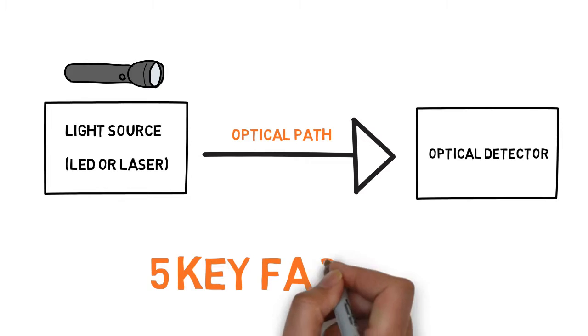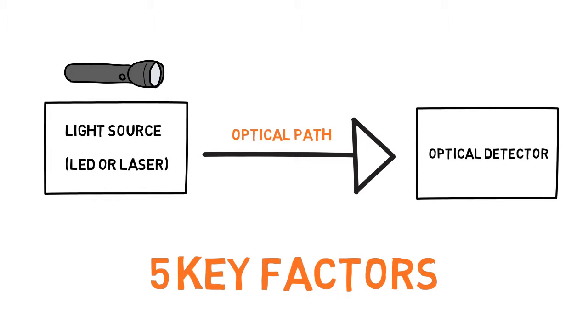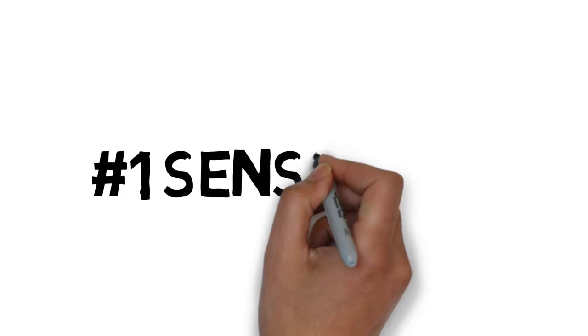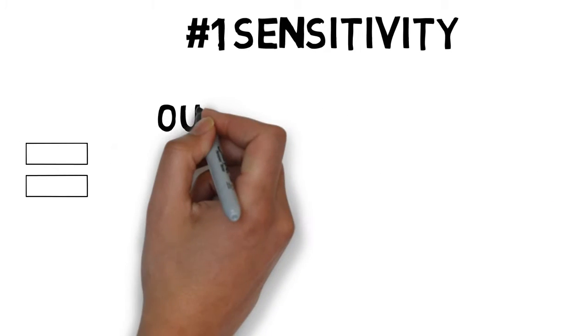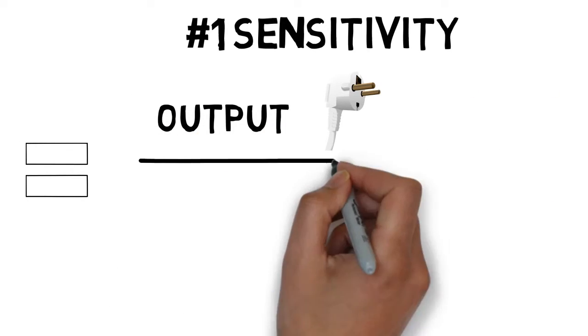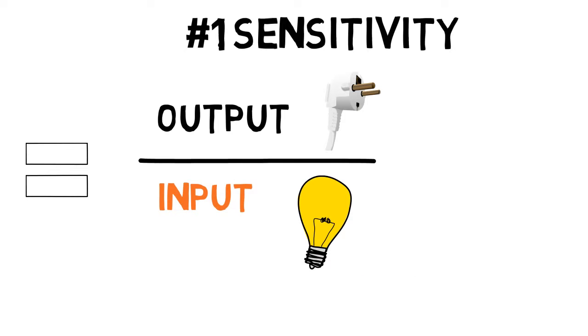There are five key factors which differentiate the different types of photodetectors. Number 1, Sensitivity. This is the ratio of output electric current to input optical power. In other words, this measures the efficiency of the device by assessing how much energy is lost. If the number is high, that is good. If it's low, that's bad.